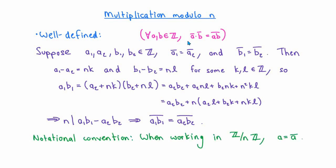Now that we know both addition and multiplication are well defined on residue classes modulo n, let's relax our notation. From now on, instead of writing ā, let's just write a for the residue classes of integers modulo n. Keep in mind that when we're working modulo n, integers actually represent equivalence classes — each integer modulo n represents a whole set of integers equal to that integer modulo n.